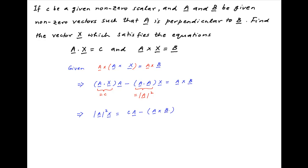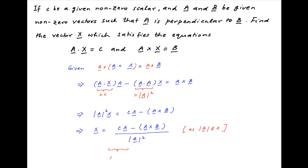Now we divide both sides by the absolute value of vector a whole square, which is given to be nonzero, and so the value of vector x is equal to c times vector a minus (a cross b), divided by the square of the absolute value of vector a. This is the required answer.